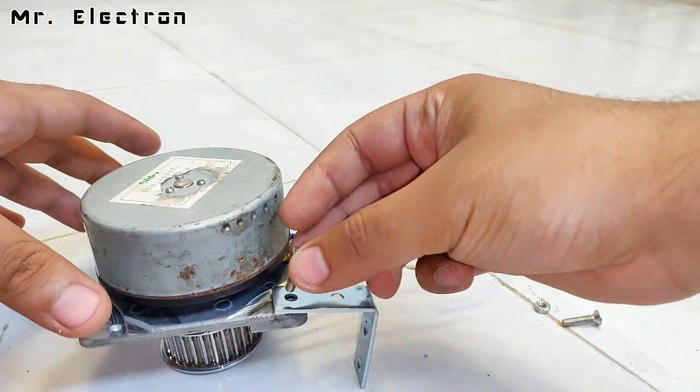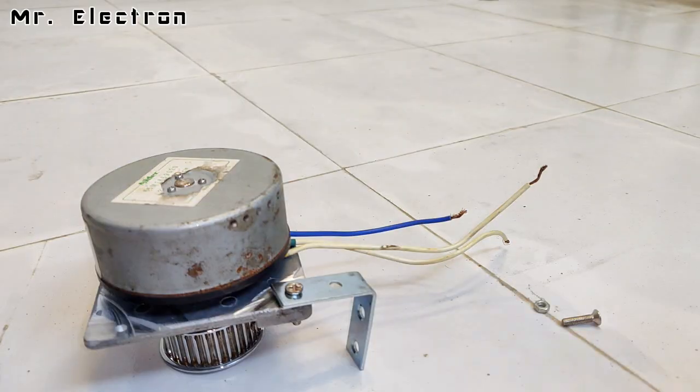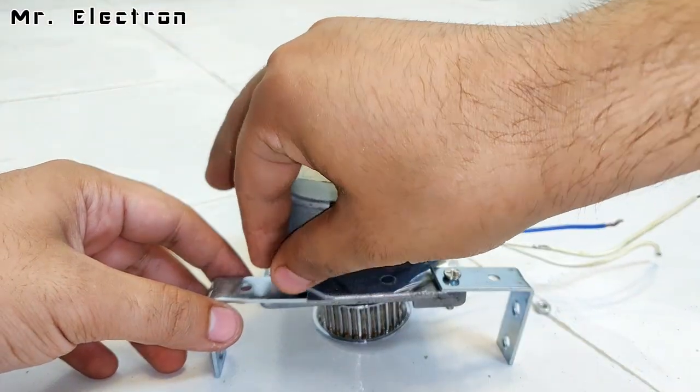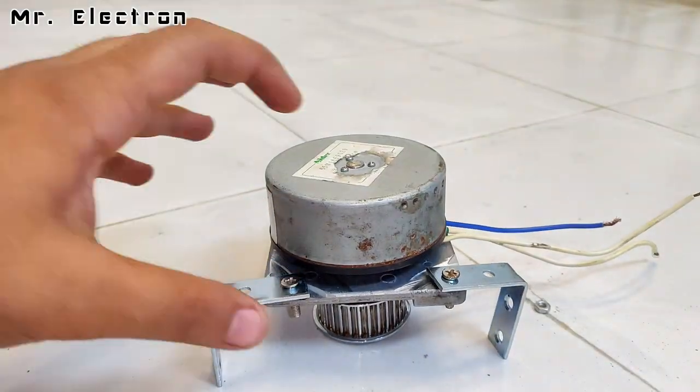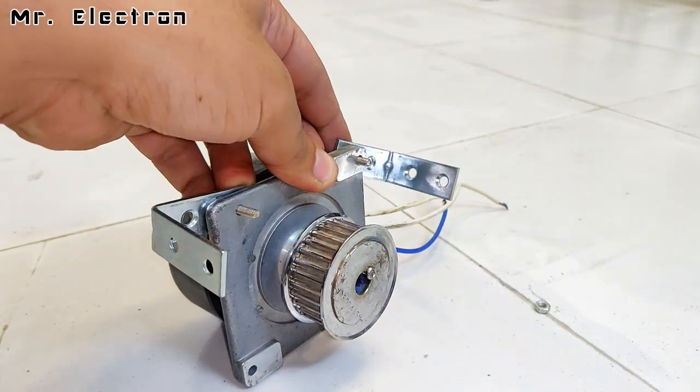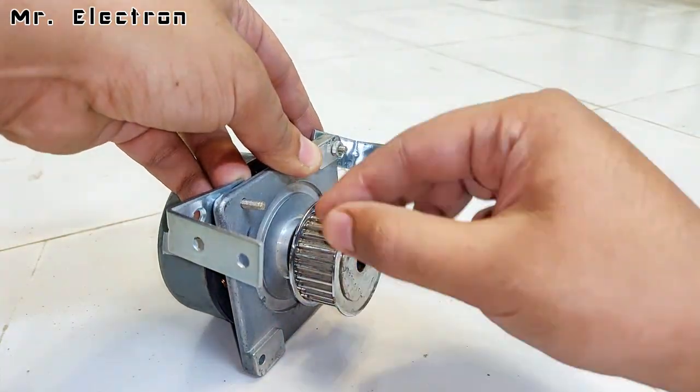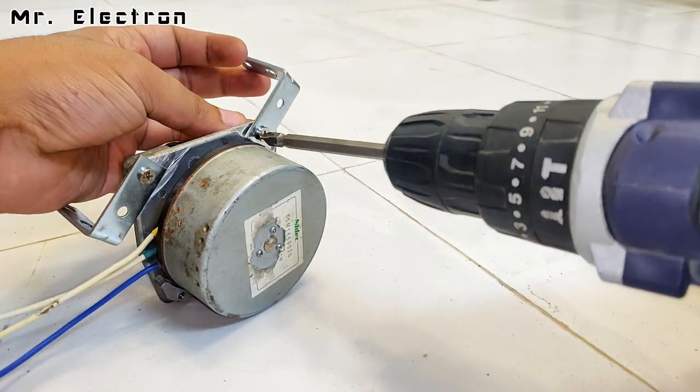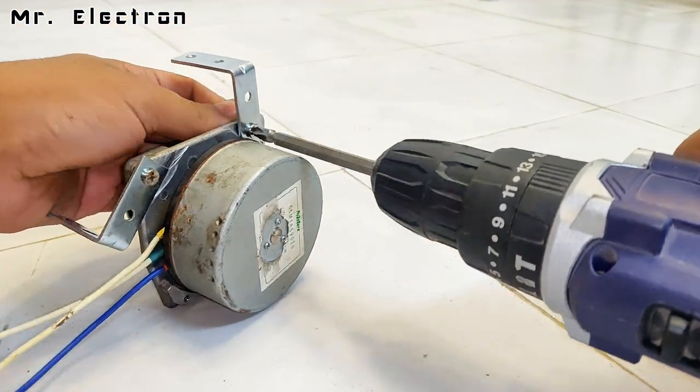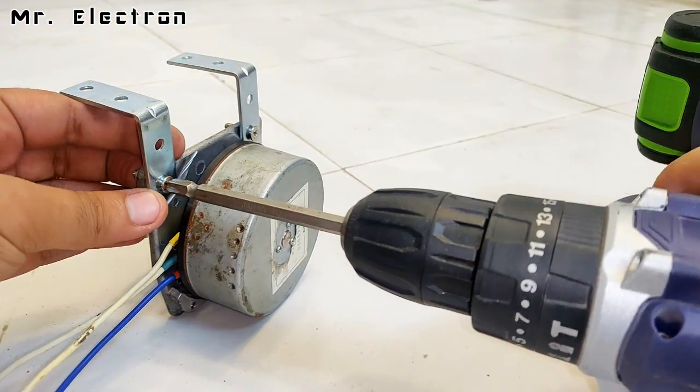As you can see, I'm using L brackets for making a base stand for this motor. I got these brackets also from Banggood and links will be provided in the description. This cordless drill is also from Banggood, it works really nice. You can see the stand is perfectly made.